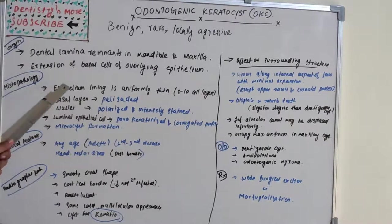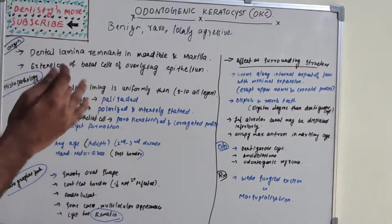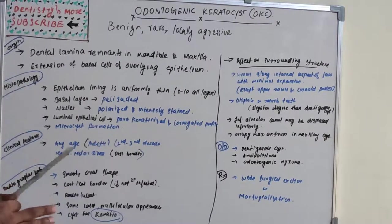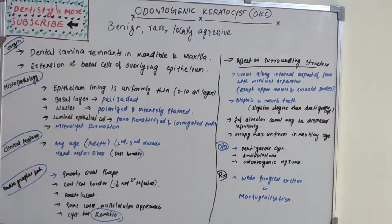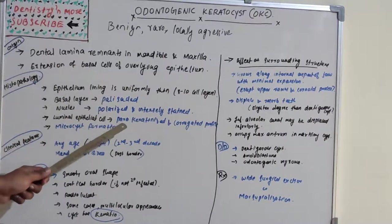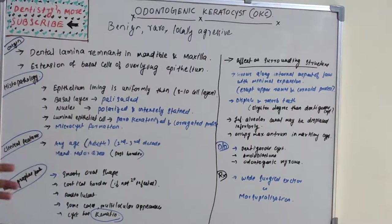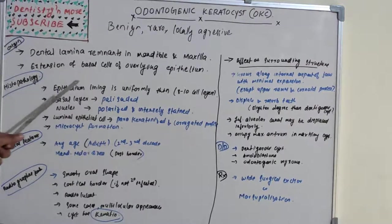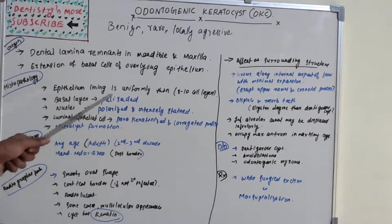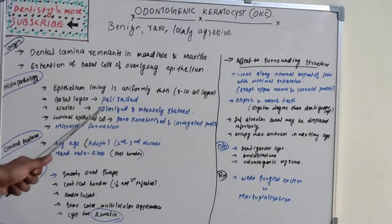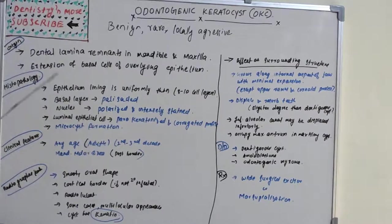Moving on to the histopathology: the epithelium lining is uniformly thin, about 8 to 10 cell layers. The basal layer is palisaded, the nuclei are polarized and intensely stained. Luminal cells have a parakeratinized and corrugated profile, and there will be micro-cyst formation. In summary: uniform epithelium lining, palisaded basal layer, polarized and highly stained nuclei, parakeratinized and corrugated luminal epithelial cells, and micro-cyst formation.